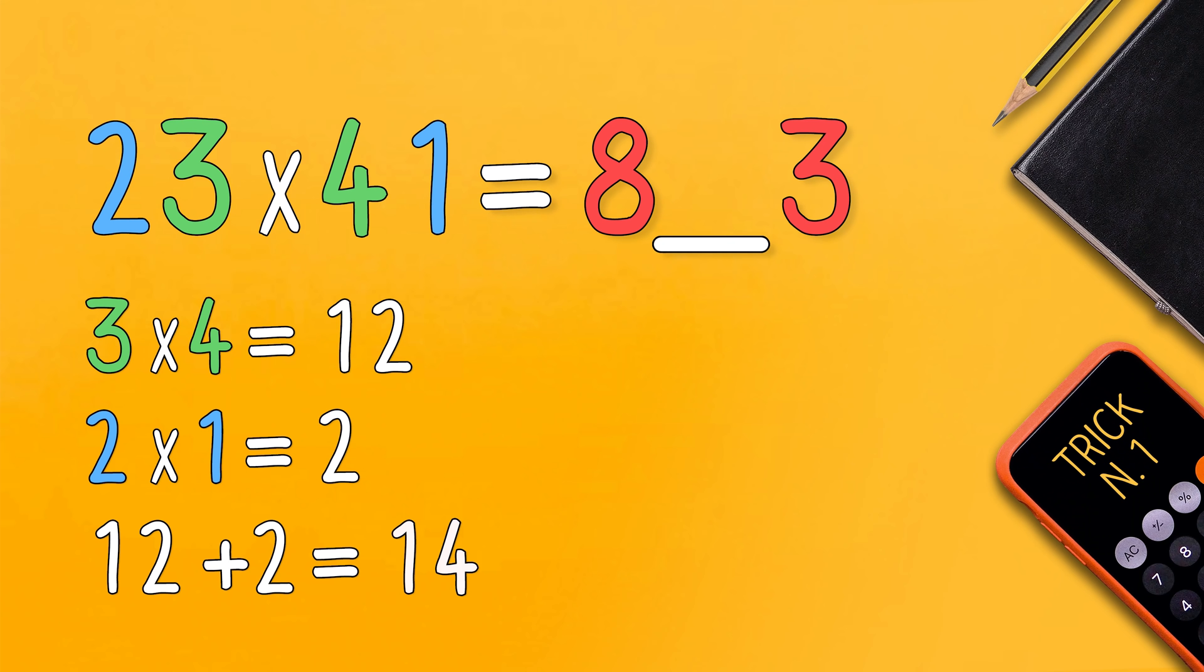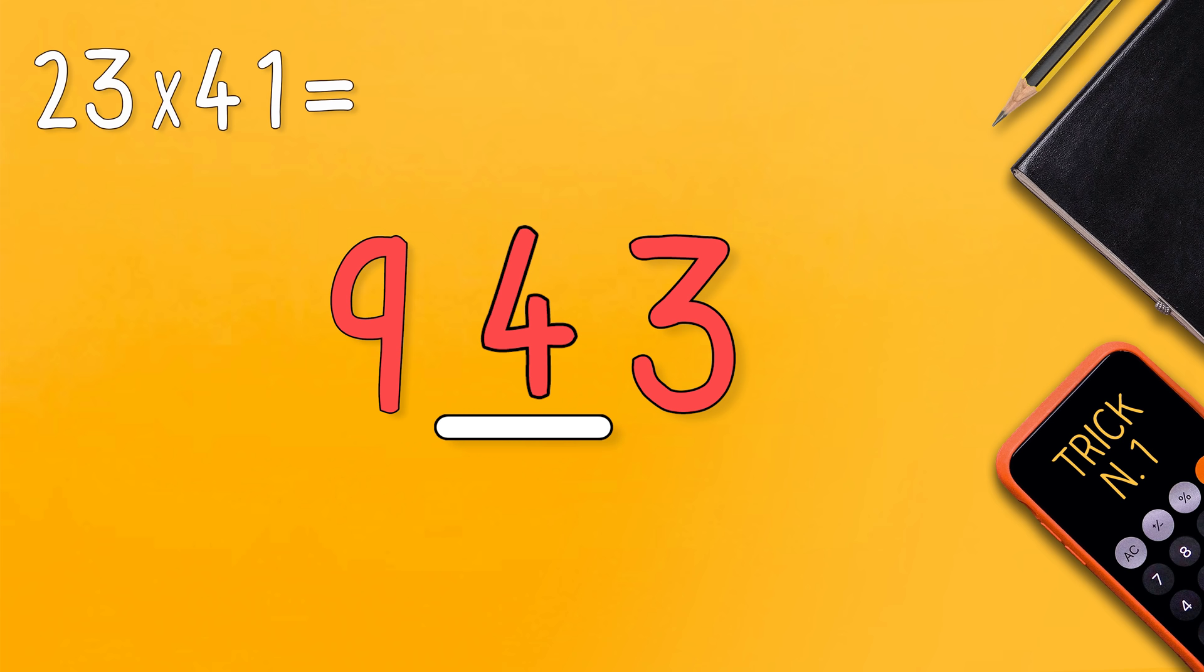By practicing I realized that there are different situations from the previous case. When for example the middle number of the answer is higher than 10, the last digits go into the empty space while the first digit gets added to the first digit of the result.